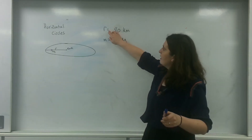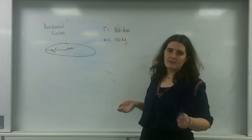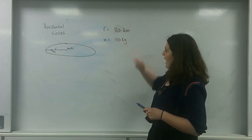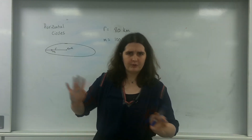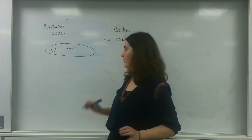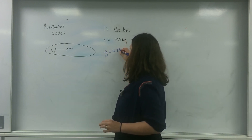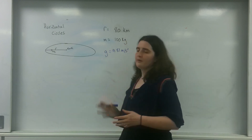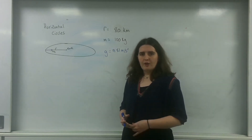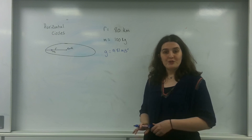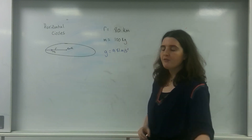So this object here has R equal to 80 kilometres, because that's about the borderline of the atmosphere. M is 100 kilograms. And we're going to assume that the gravitational field strength is still 9.81 metres per second squared. I'm going to find the orbital velocity — the tangential velocity. So I'm trying to find V.